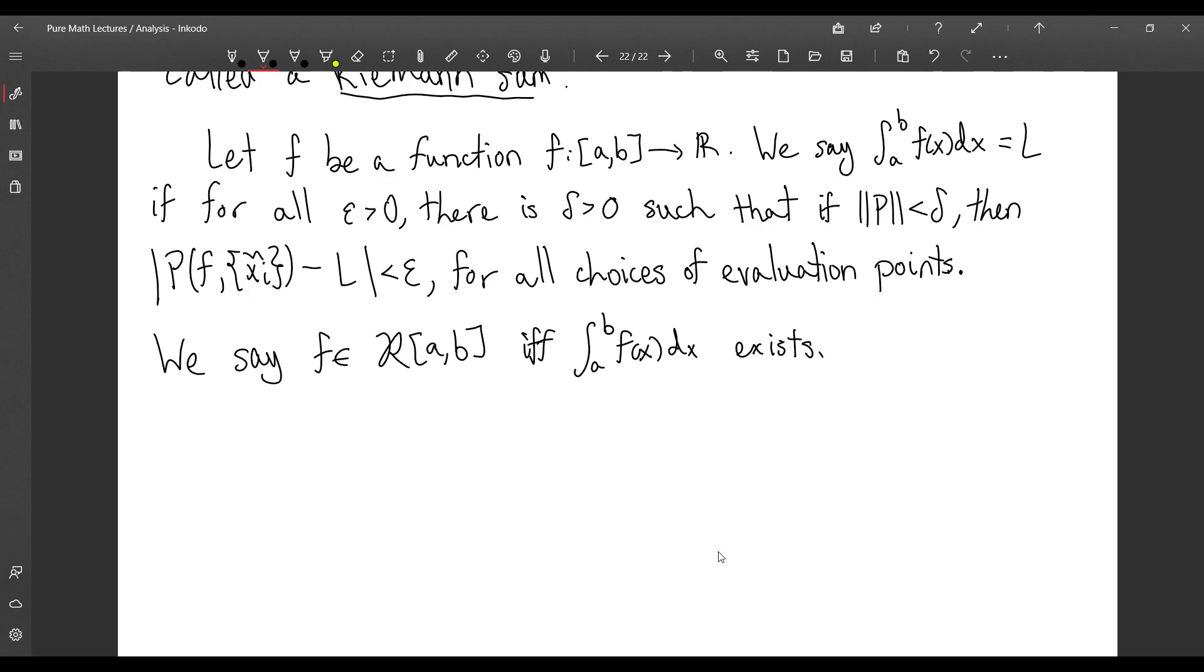One way this can happen is if changing your evaluation points drastically changes your value of the Riemann sum. So one example of this is a function which is 1 on the rationals and 0 on the irrationals. Your choice of evaluation points is going to drastically change your value.